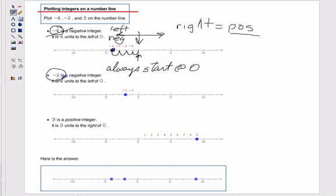If we look at negative 2, again we always start at zero. So we start right there at zero, go negative 1, negative 2, put a big dot, and we're done.